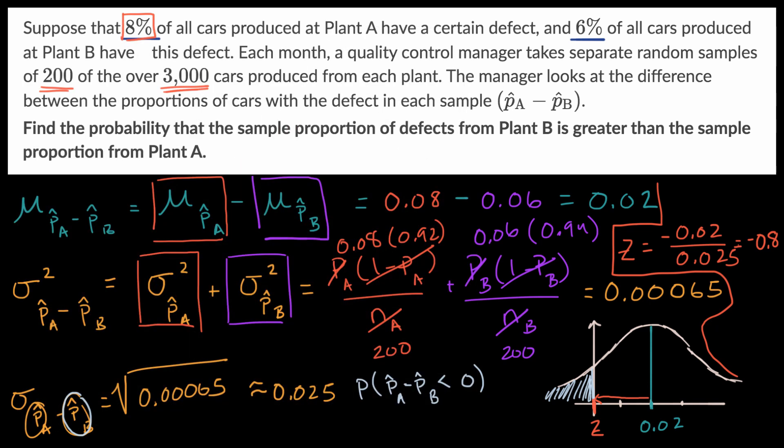So let me get rid of this. And so we know that this right over here is approximately 21%, or we could say 0.21. So the probability that the sample proportion of defects from plant B is greater than the sample proportion from plant A, it's give or take, it's roughly one in five.